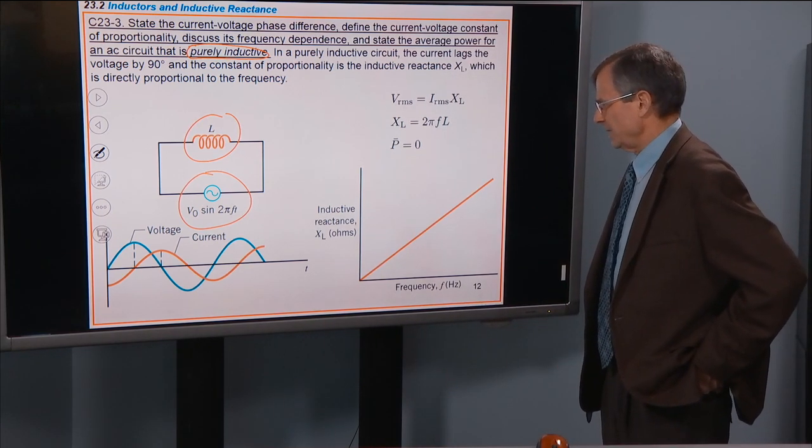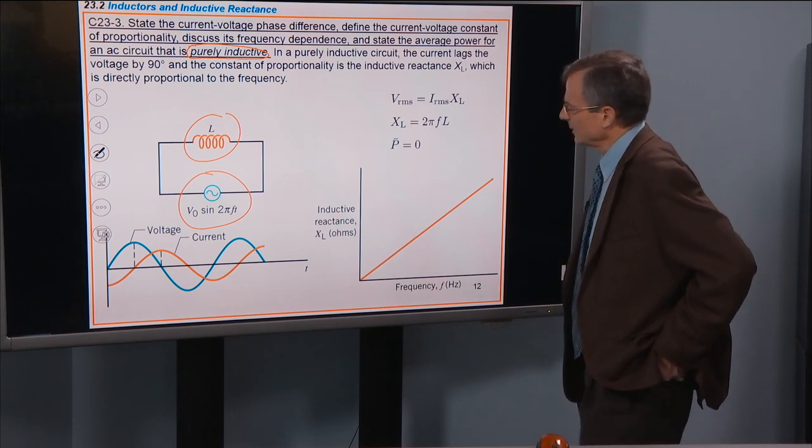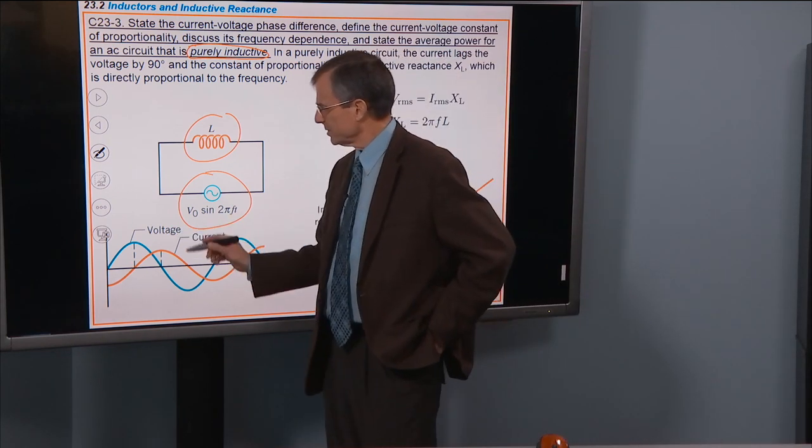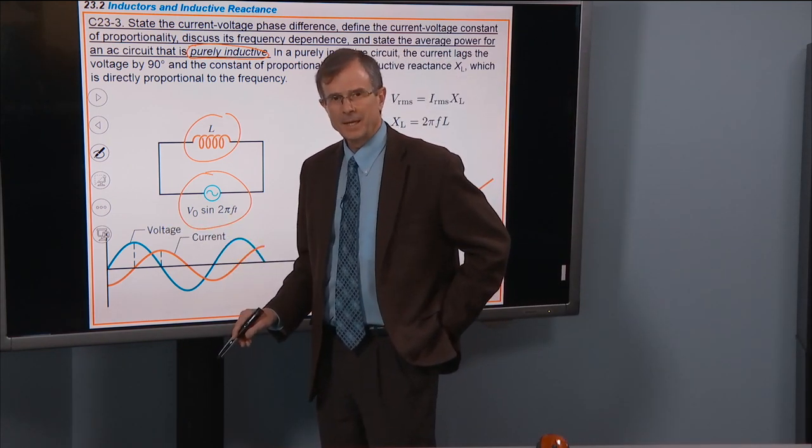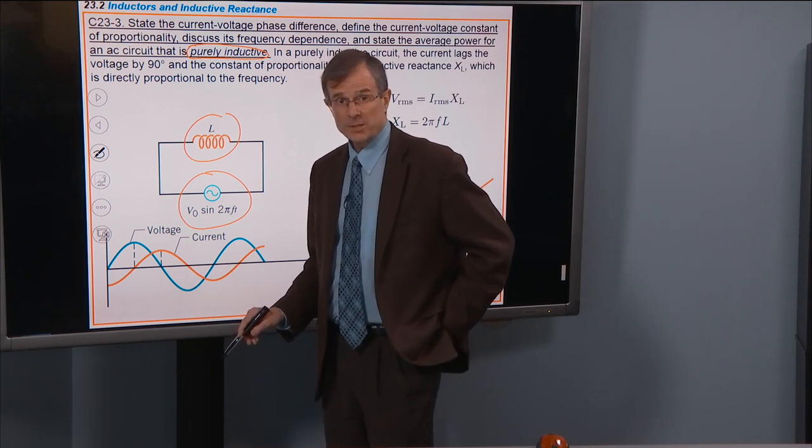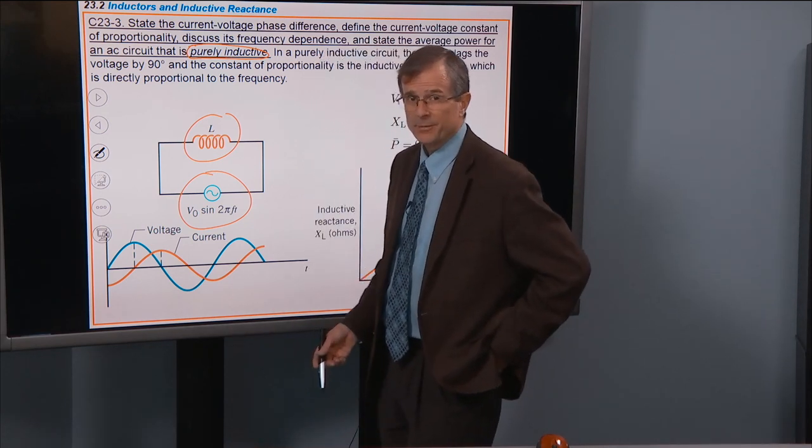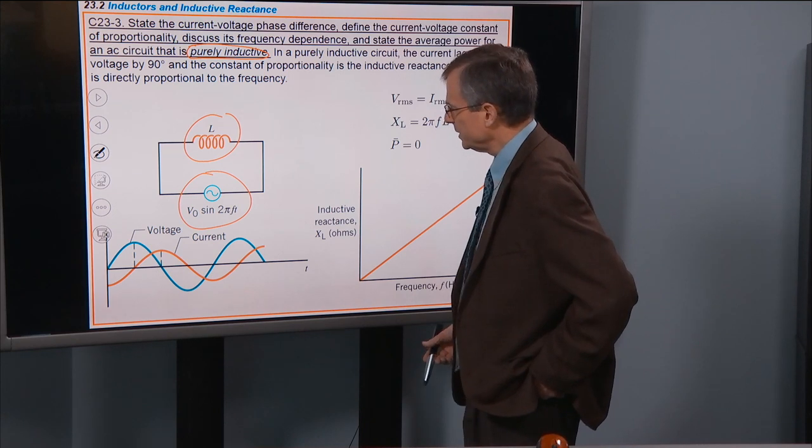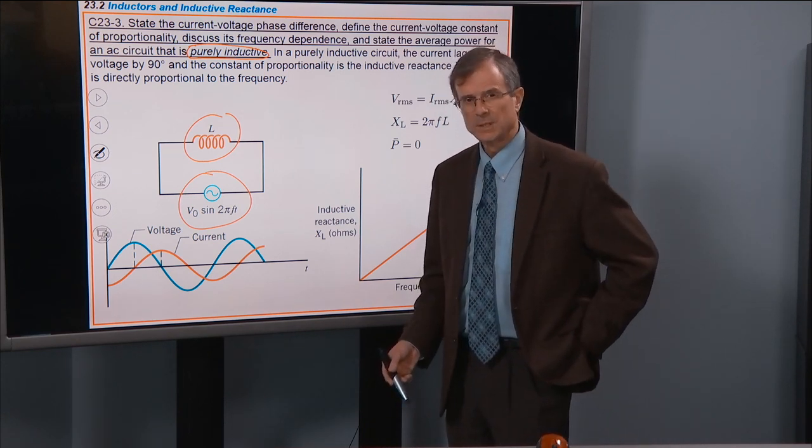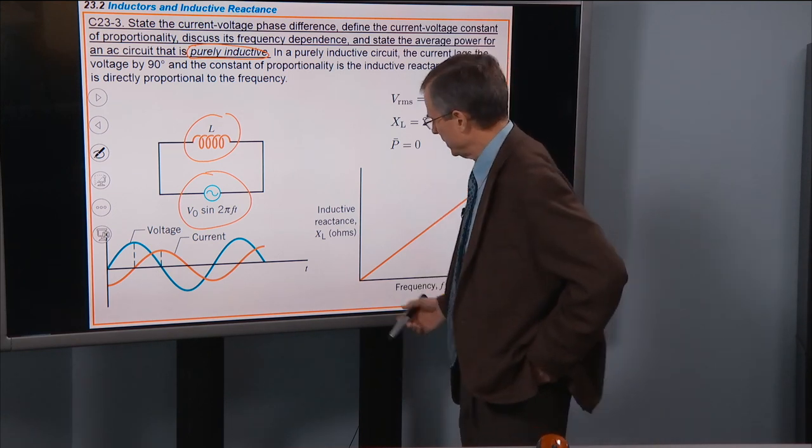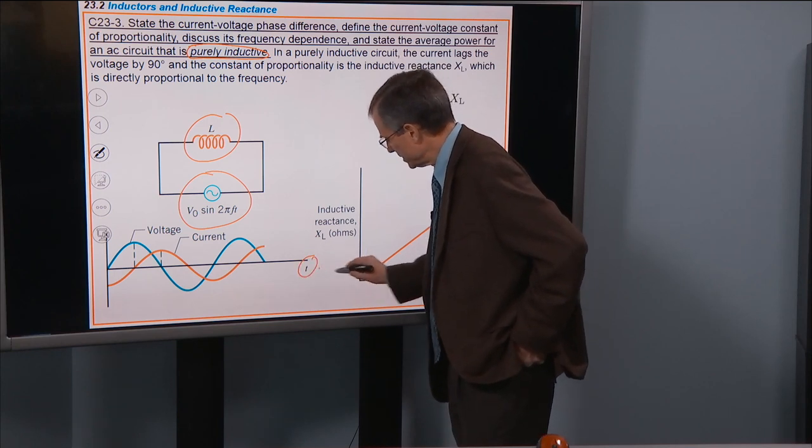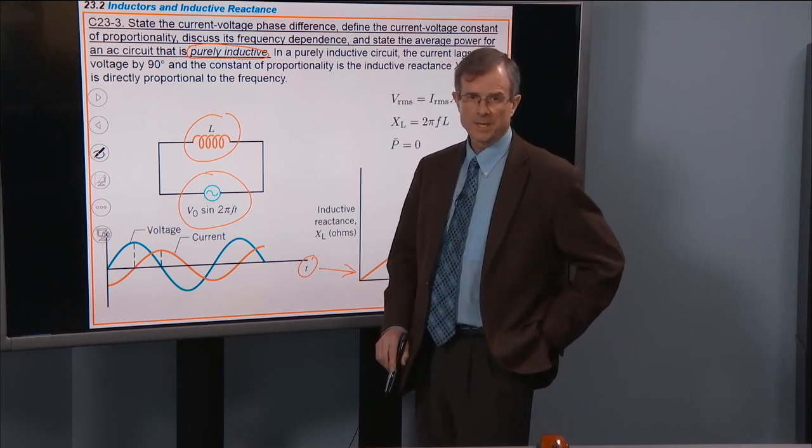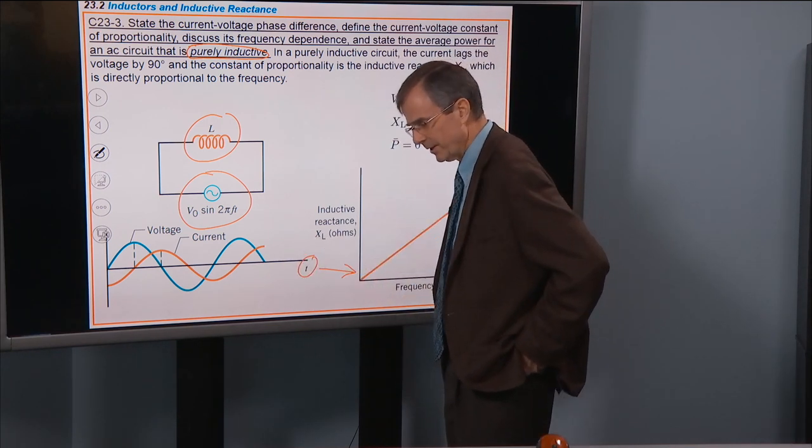The answer is that the voltage and the current are again out of phase with each other, 90 degrees out of phase. But which one reaches its peak first, the voltage or the current? Remember that this is the direction of increasing time, time getting longer, later and later.